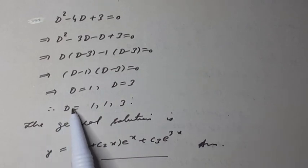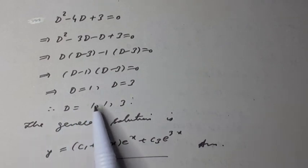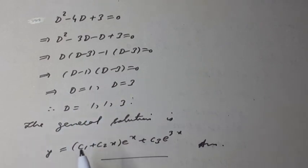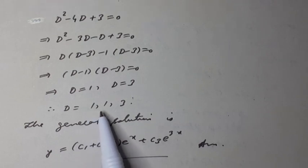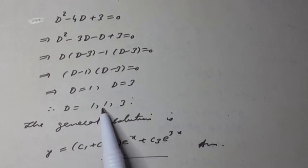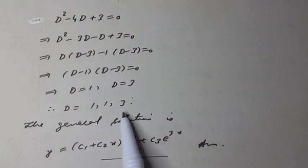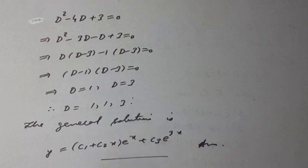Therefore, D equals 1, 1, 3. Here we see that 1 and 1 are real and repeated roots, and 3 is a real and distinct root.